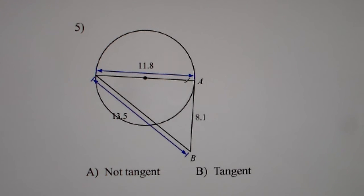Looking at number 5. We want to test this right angle right here. So we got 11.8 squared plus 8.1 squared. Let me find out that's 204.85.